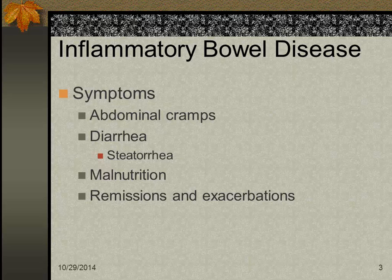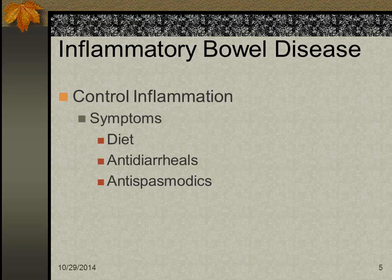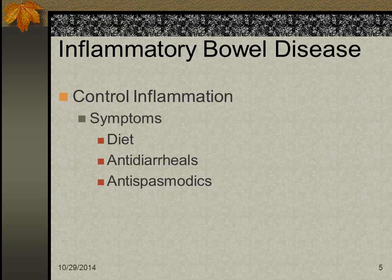Treatment goals are to control inflammation, prevent complications, and maintain nutrition. We use CRP — C-reactive protein — as a baseline, since this is something we shouldn't have in our blood except when inflammation is going on, so we use this blood test to see how the patient is doing.